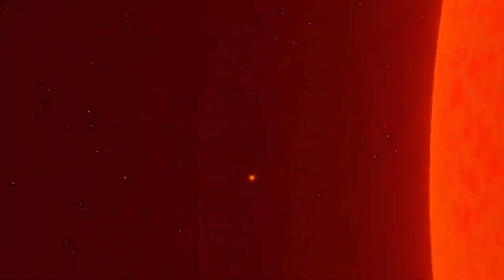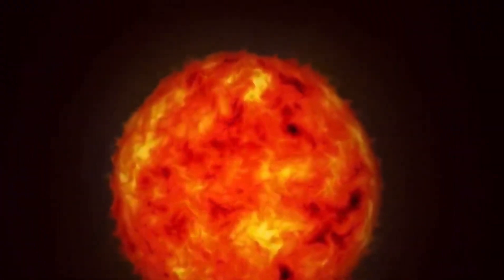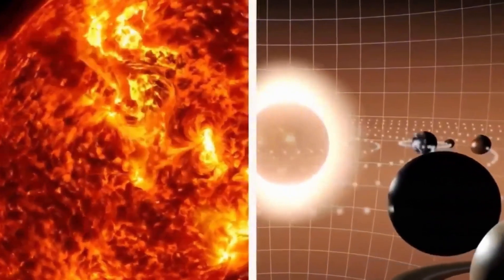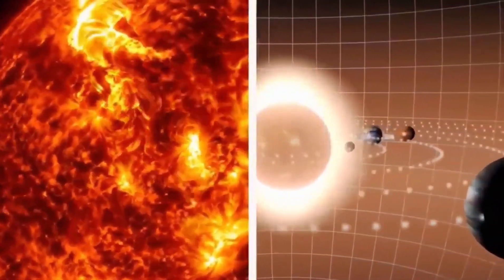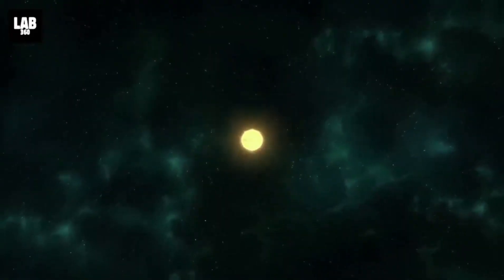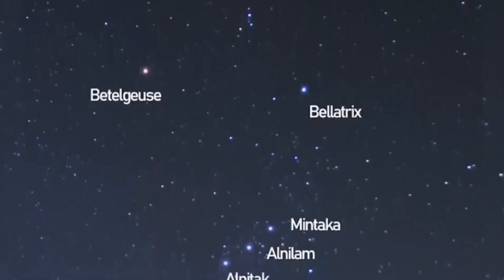Can you imagine a single star dwarfing our entire solar system? To provide some perspective on the sheer enormity of Betelgeuse, if it took the place of our sun, its edges would extend all the way to Jupiter. How can a single star achieve such colossal proportions?